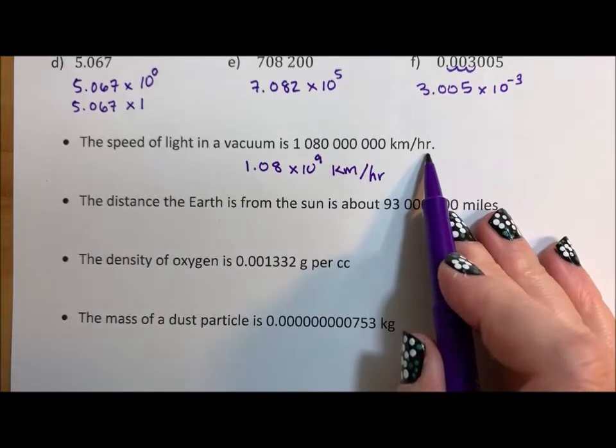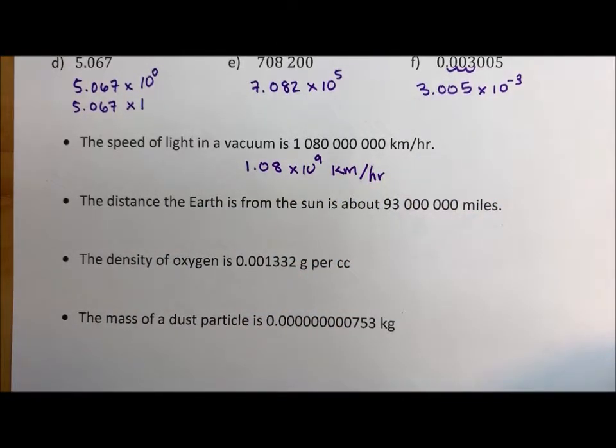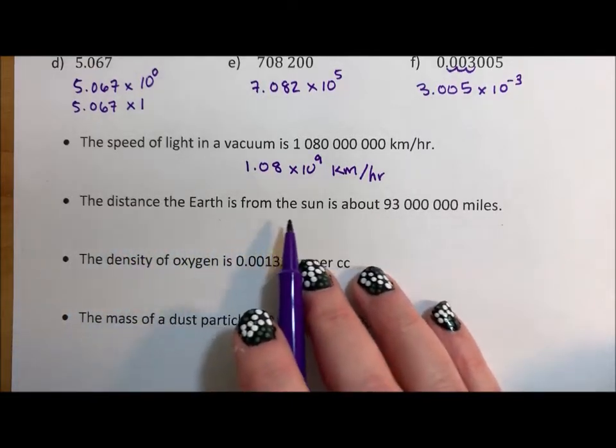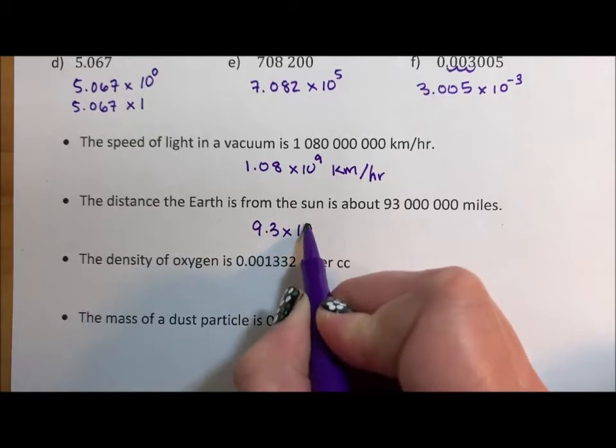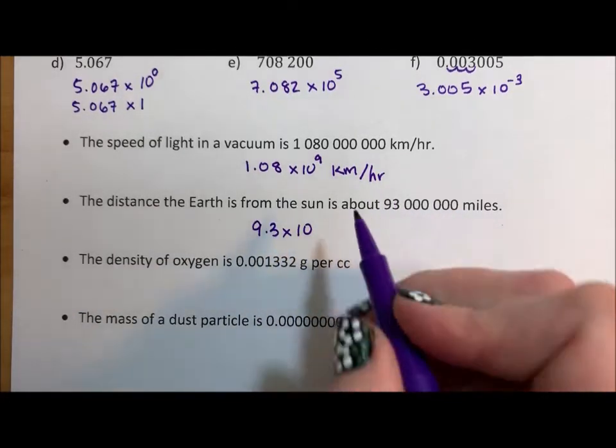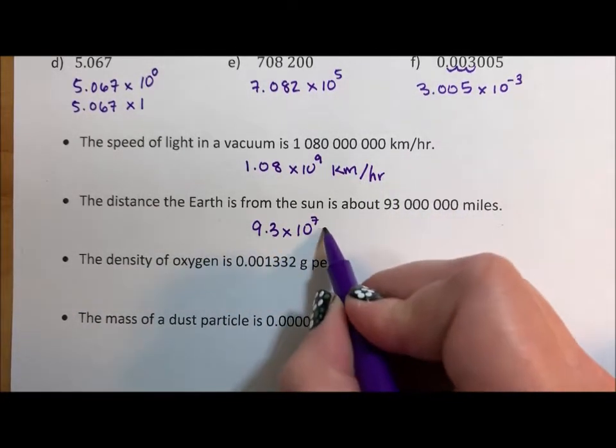If you are given labels, make sure your final answer has those same labels. That's really important. Mathematicians love their labels on answers. Anytime you can label an answer, it's a beautiful thing. The distance from the earth to the sun is about 93 million miles. So that's 9.3 times 10, one, two, three, four, five, six, seven miles.